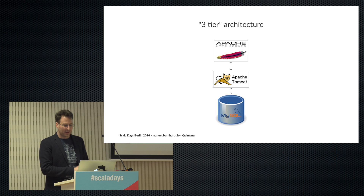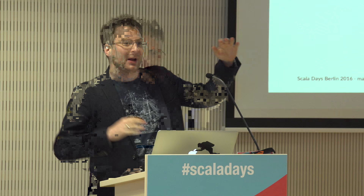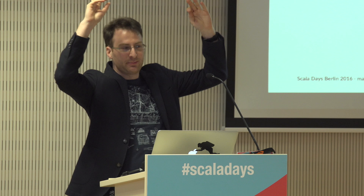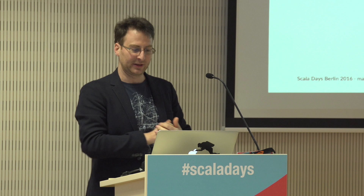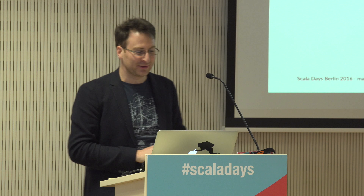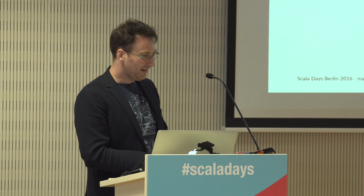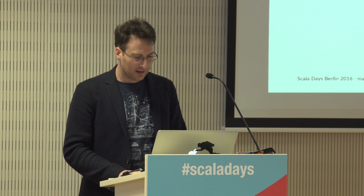Fast forward a few years and we had a very popular three-tier architecture: an Apache HTTP server in front, an application server in the middle like Apache Tomcat, and a MySQL backend database. Many of you worked with exactly this setup. It was great — you only had two network connections represented by arrows. You could do many things, though not everything.